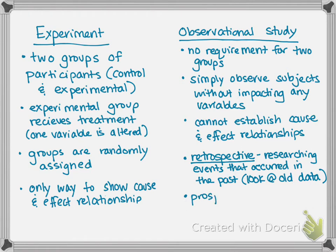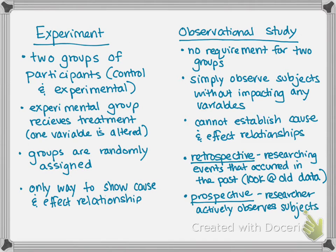In a prospective study, the researcher actively observes the subjects, maybe over a period of time. It's possible that you could have a prospective observational study that actually lasts years — those are called longitudinal studies. But if the researcher is the one actively collecting that data, it's still considered prospective even though it takes place over time. We want to make that distinction before we move on to some examples.